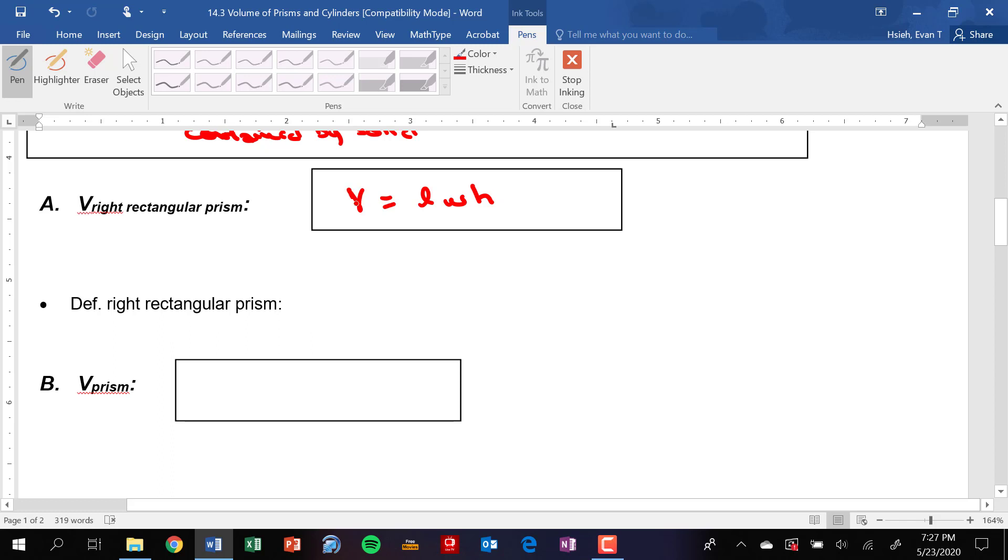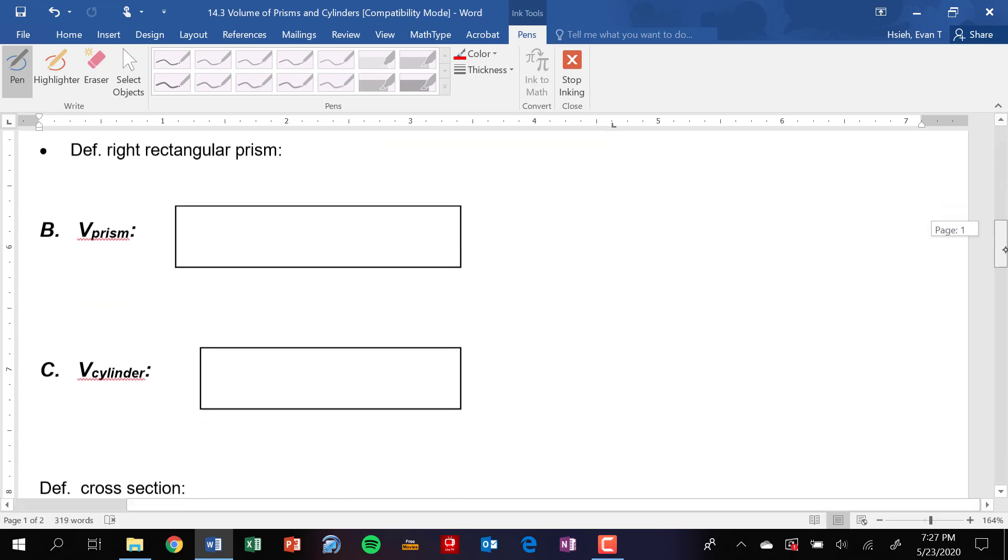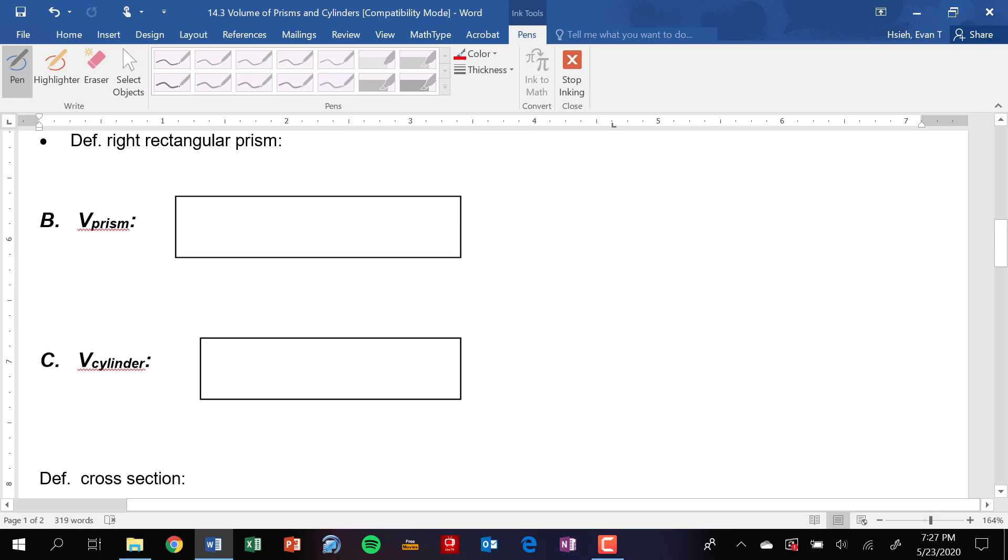Again, most of you knew that already. The volume of a prism in general—and we talked about prisms earlier in the chapter—the volume of a prism is going to be equal to the area of the base times the height of the prism. So if I'm looking at like a triangular prism, the area of the base would get you to this thing, and then the height would be that thing right there.